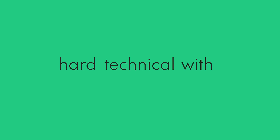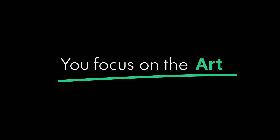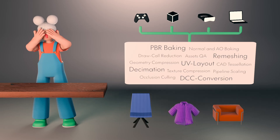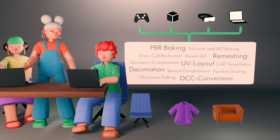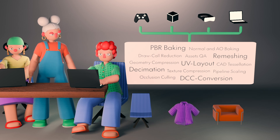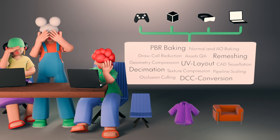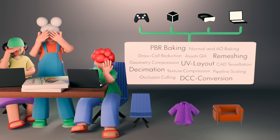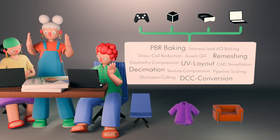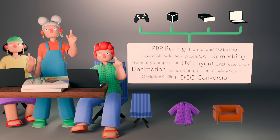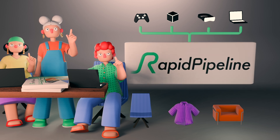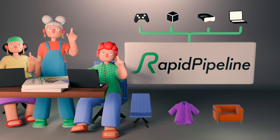RapidPipeline helps you with all the hard technical stuff of 3D production at scale and lets you focus on the art. This revolutionary technology was developed by a team of 3D graphic researchers and tech artists. Working late with lots of 3D assets, they often ordered pizza to keep going. And one day, they had a breakthrough: what if 3D data prep was as easy as that? This idea led to our solution — automating and simplifying 3D data prep so that your 3D workflows become smooth and scalable.